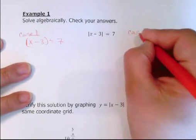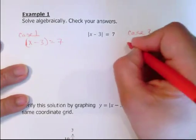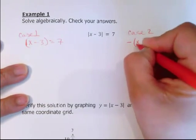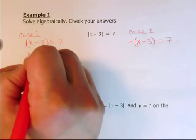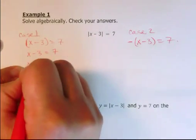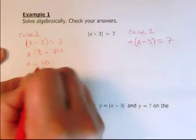And then you've got your case 2, which is the negative of it. So make sure you have your brackets there, because if you don't have your brackets, you have problems. So negative (x minus 3) equals 7. For case 1: x minus 3 equals 7, x equals 10. So that's one of our solutions.